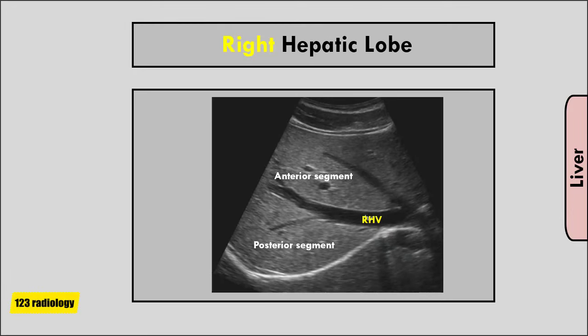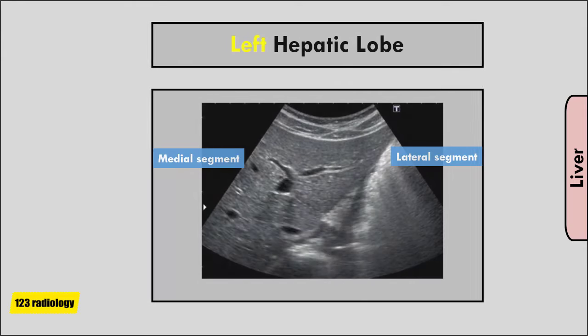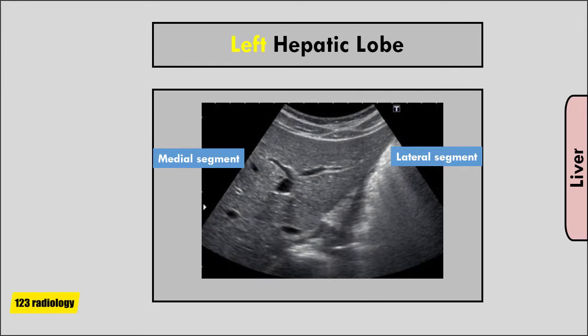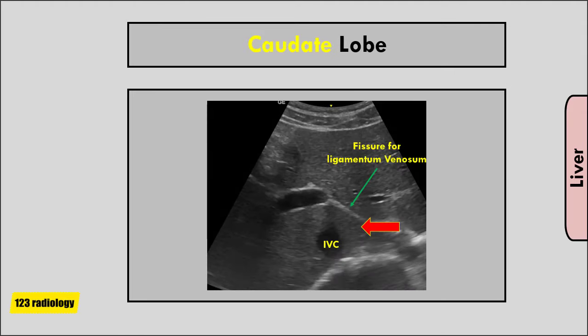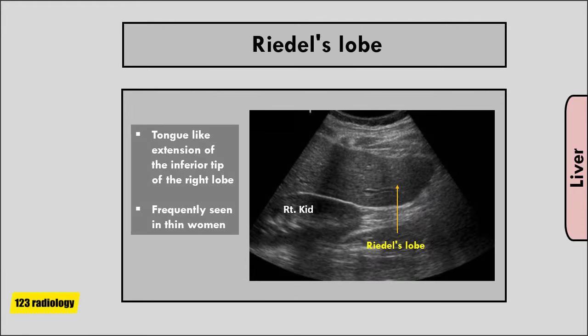The right lobe of the liver can be further divided into anterior and posterior segments. The left intersegmental fissure divides the left lobe into medial and lateral segments. The caudate lobe is situated on the posterior aspect of the liver, with the inferior vena cava as its posterior border and the fissure for the ligamentum venosum as its anterior border.